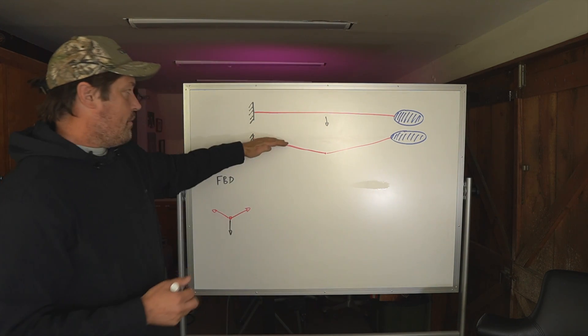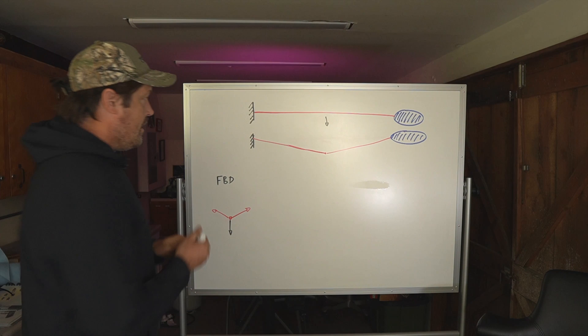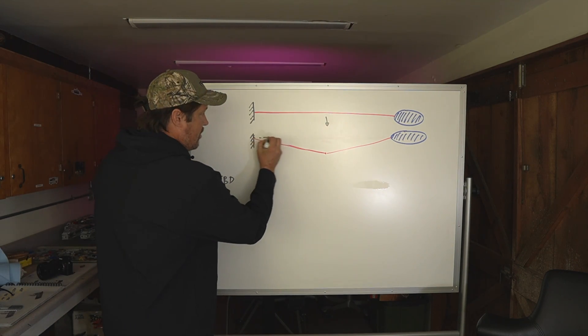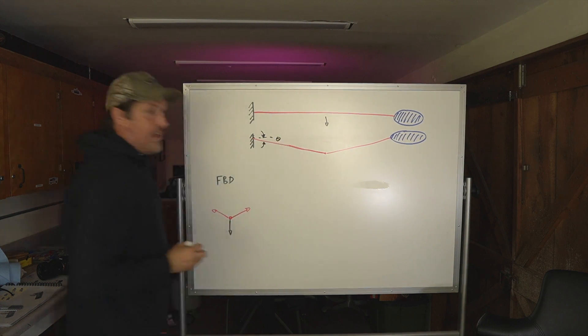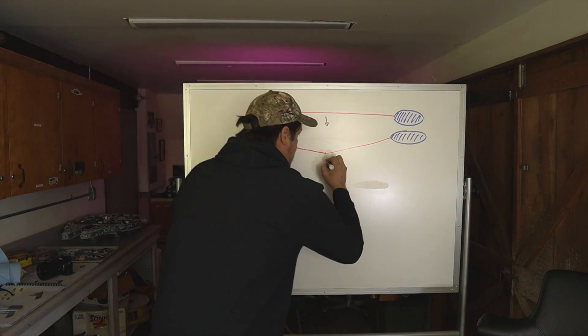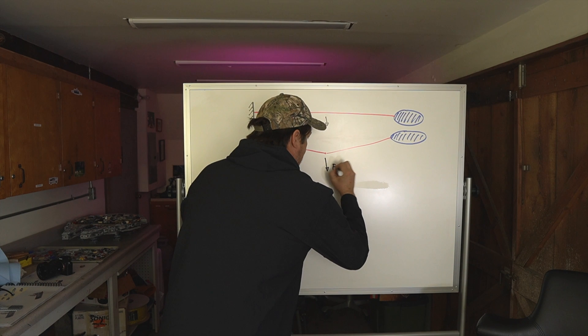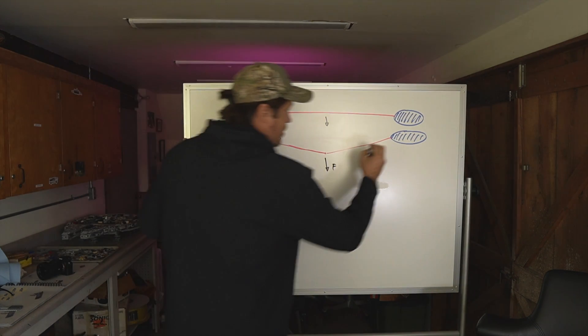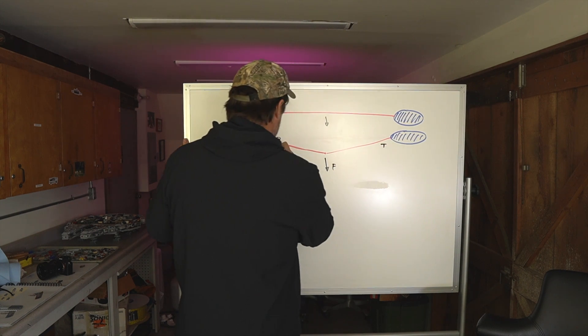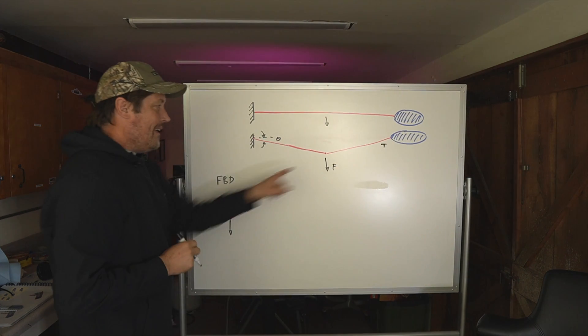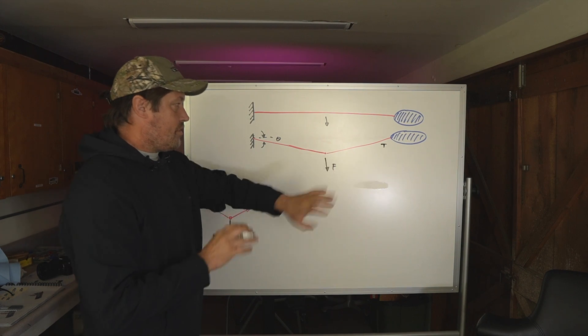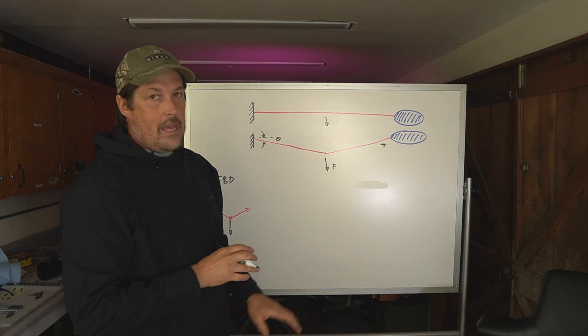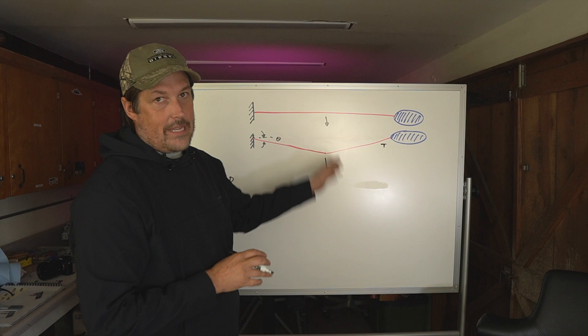And so we're going to look at a real example where we pull on it and the rope stretches, and it creates this angle right here with what it was before that we're going to call theta. And we're going to pull on it with some force F. That's our force, which creates a tension in the rope that is the same throughout the whole rope.